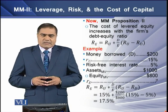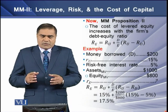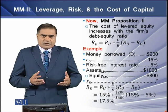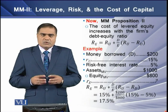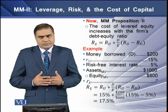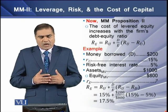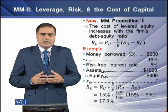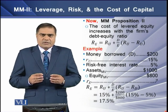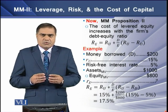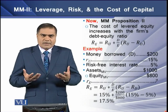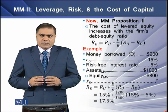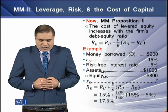According to Proposition 2, the return on levered equity equals the return on unlevered equity plus the additional risk due to leverage multiplied by the debt-to-equity ratio. Let's see how this proposition works through an example.